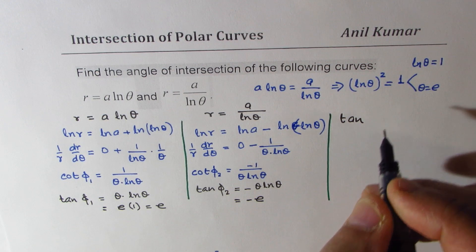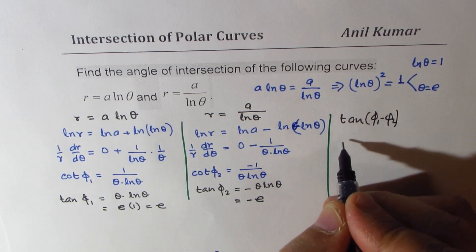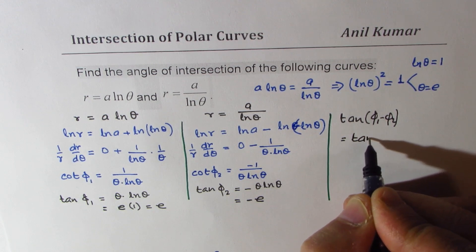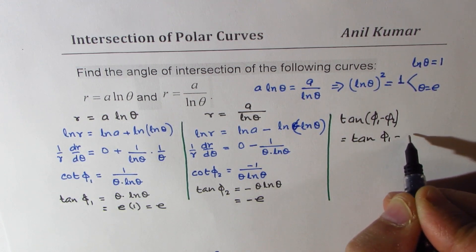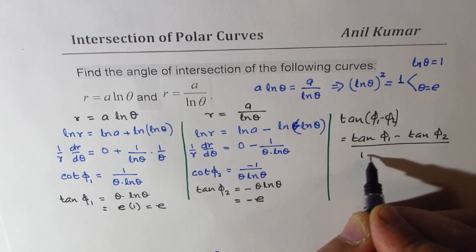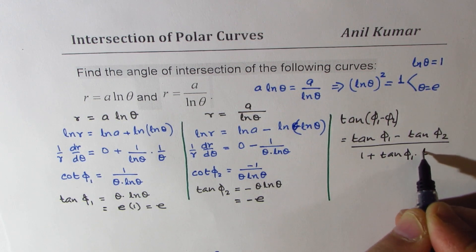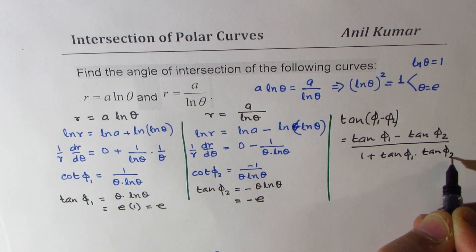We know tan of phi 1 minus phi 2 could be written as tan phi 1 minus tan phi 2 over 1 plus tan phi 1 times phi 2. Correct?